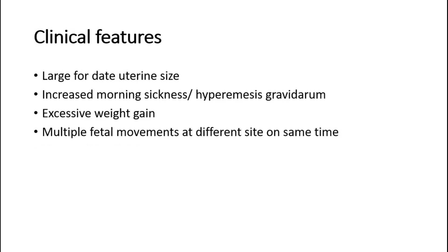Common clinical presentations in multiple pregnancy include uterine size larger than dates compared to the period of gestation. The mother might complain of increased morning sickness, also called hyperemesis gravidarum, excessive weight gain especially during early pregnancy, and she might feel multiple fetal movements at different sides of the abdomen at the same time, suggesting more than one fetus.